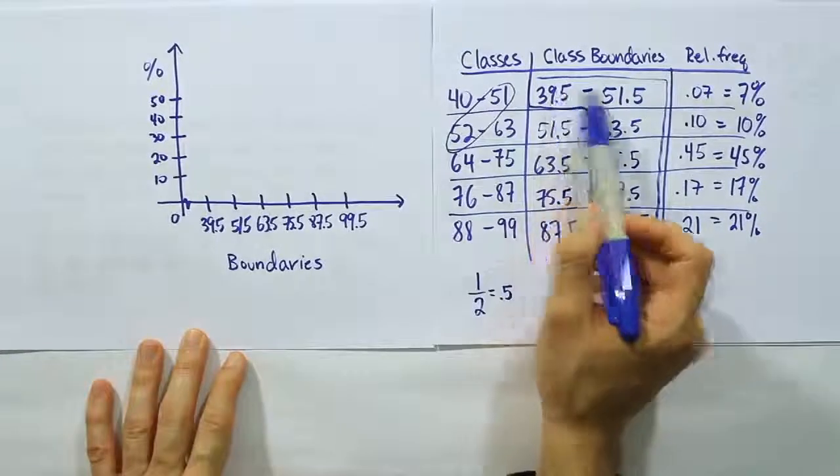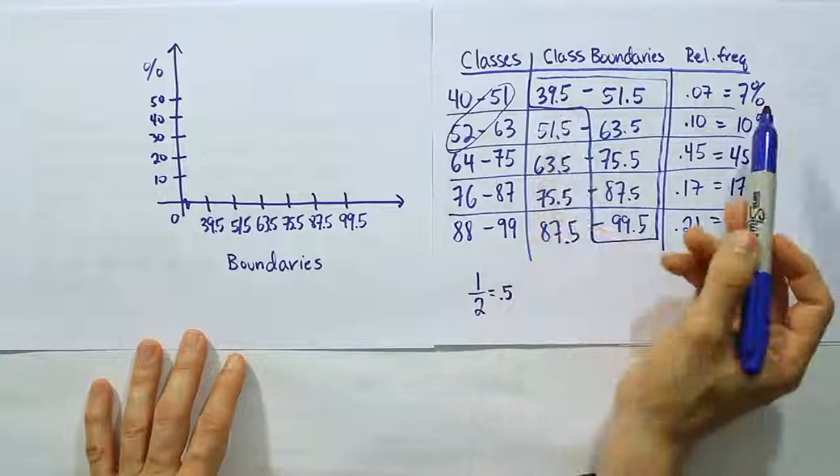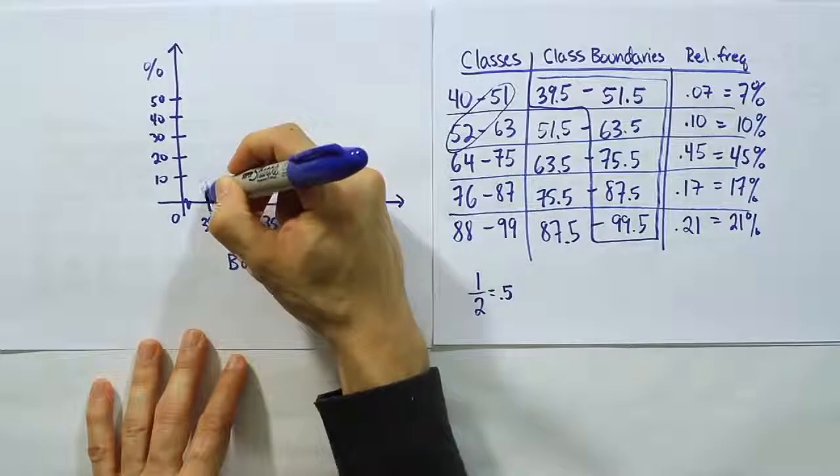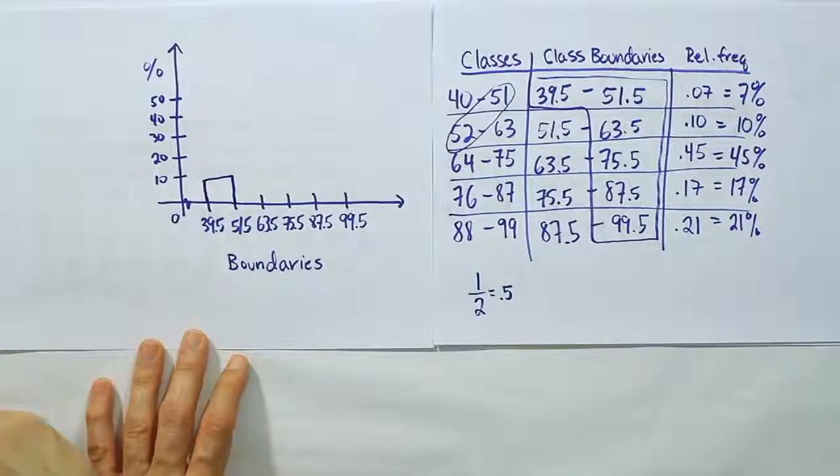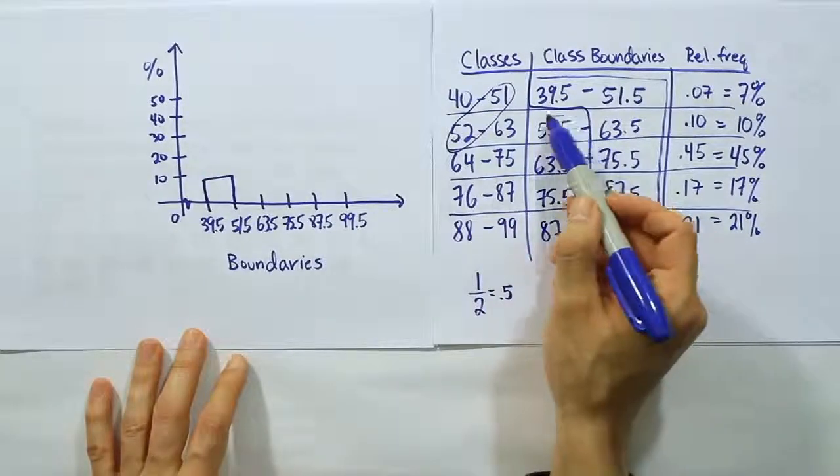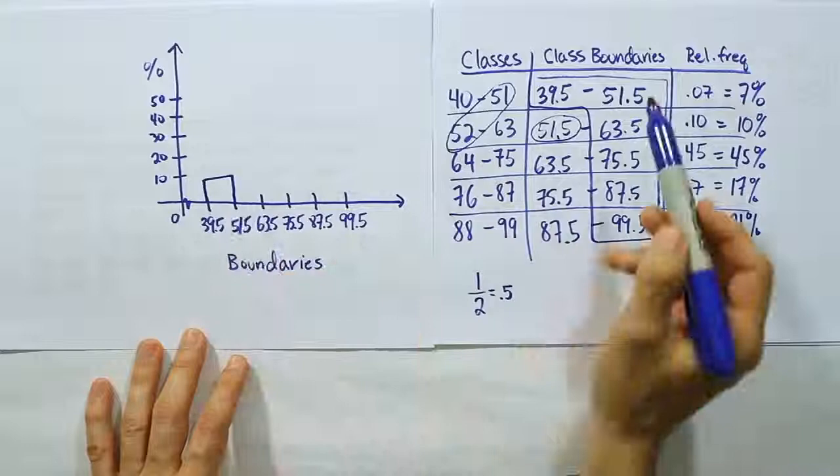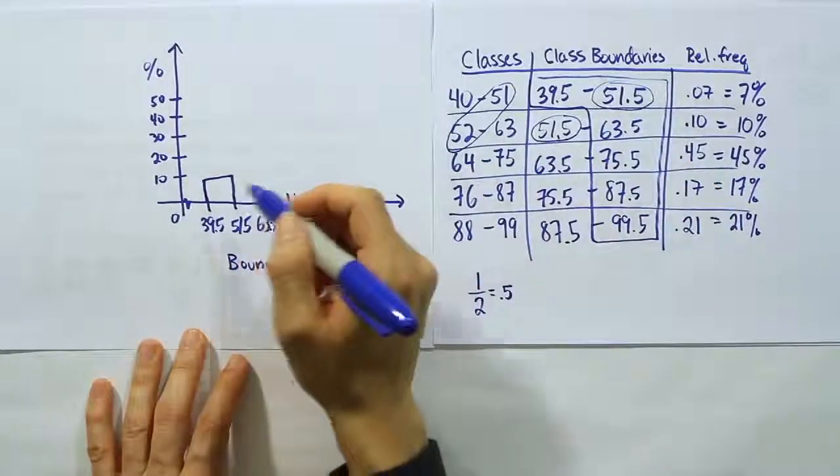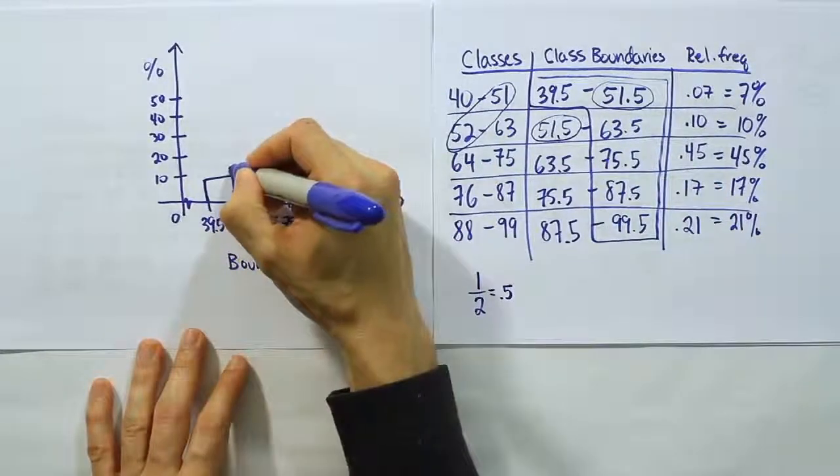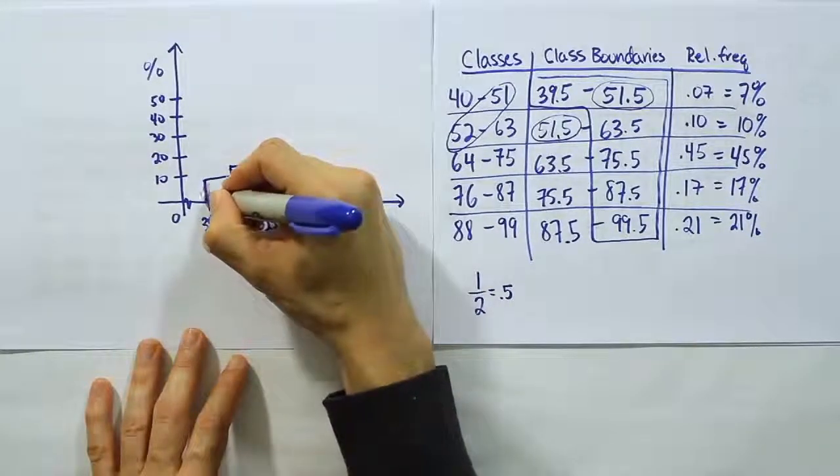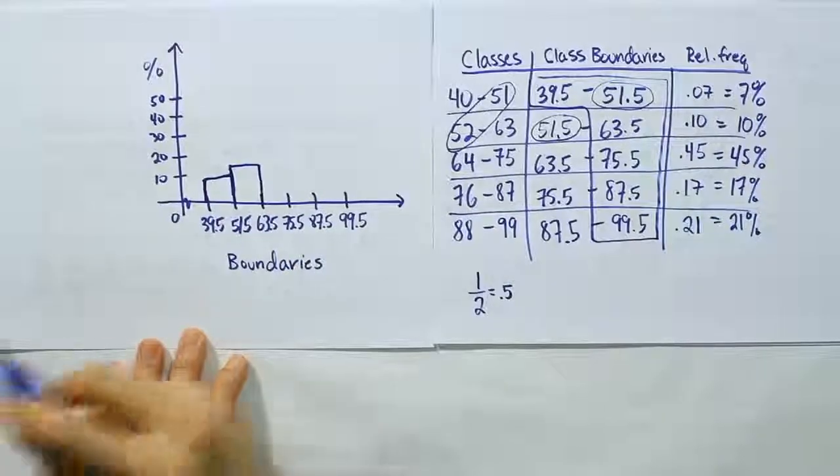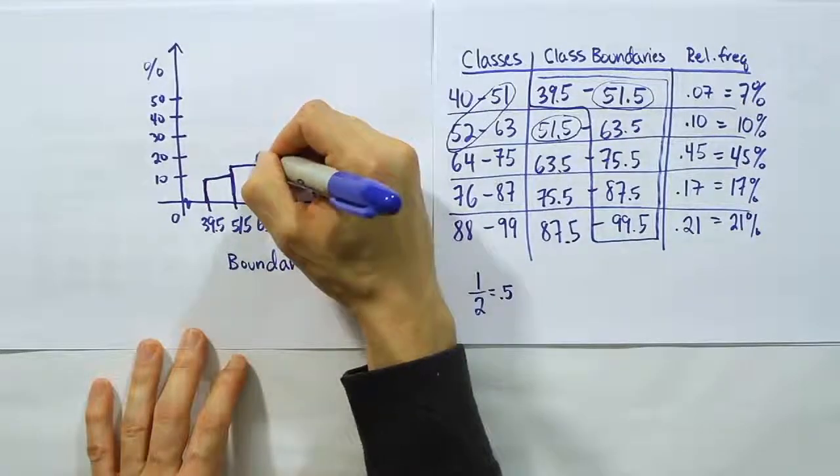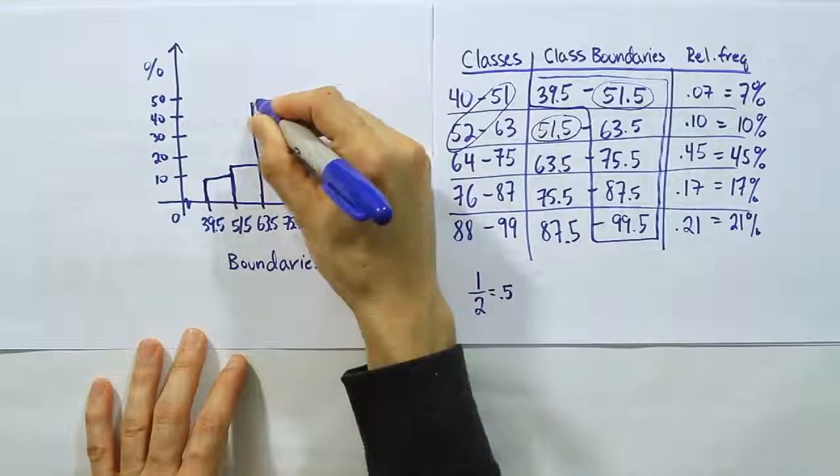And then we just draw rectangles. This first rectangle would essentially be 7% tall. That means the rectangle that would go from 39.5 to 51.5 would be about 7% tall. So a little shorter than the 10 there. And then if I did the same for the next one, notice how it starts here at 51.5, which is the same place the last one ended. That's purposeful because we don't want to have any gaps between these rectangles. So we're going to join the side here with the 63.5, and we're going to go up to 10% this time. Then 63.5 to 75.5, that's supposed to be 45. So that's way up here, almost up to the middle.